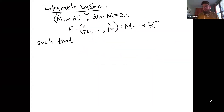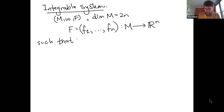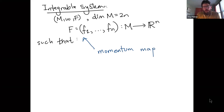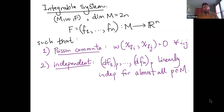An integrable system starts with a symplectic manifold of dimension 2n, and we equip it with n real-valued functions, which I package together into a map F called the moment map or momentum map, giving a function into R^n. The components should Poisson commute — there are various ways to write this using the Poisson bracket — and they should be independent.